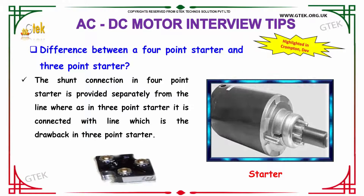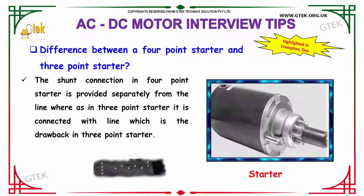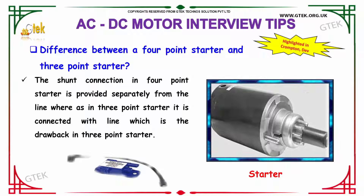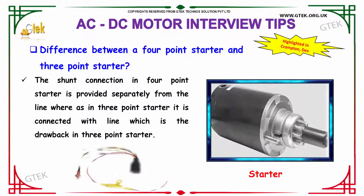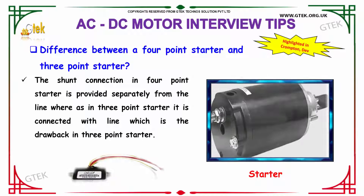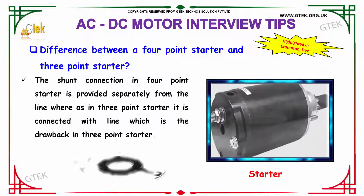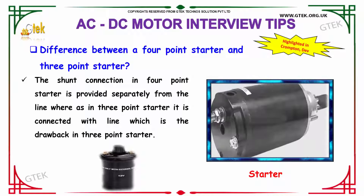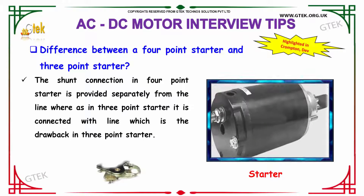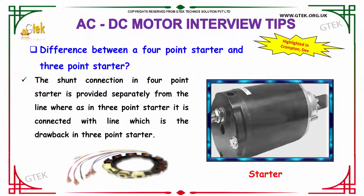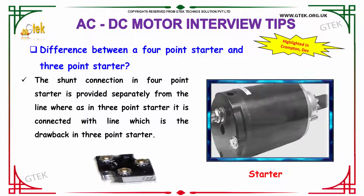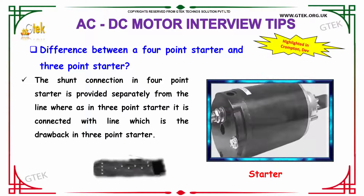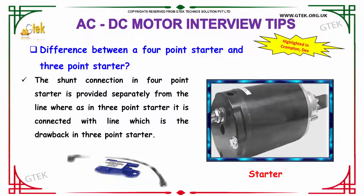The difference between a four point starter and the three point starter: the shunt connection in the four point starter is provided separately from the line, whereas in the three point starter it is connected with the line, which is the drawback of the three point starter. This is the main difference between a four and three point starter.